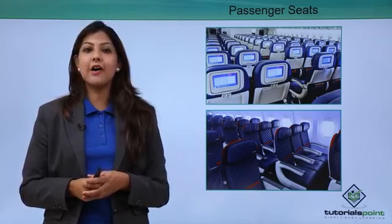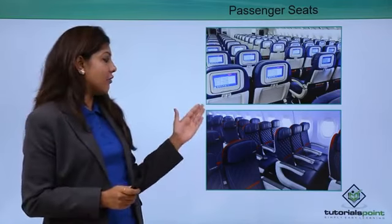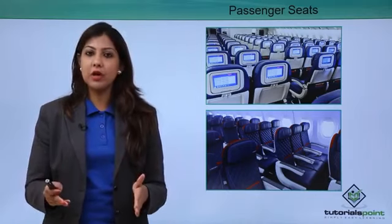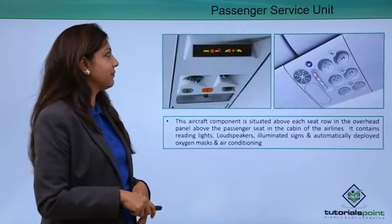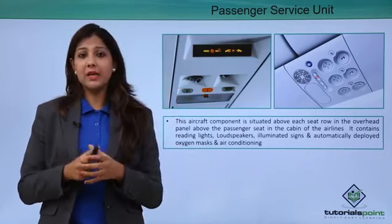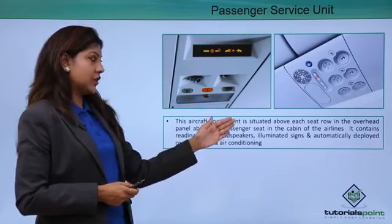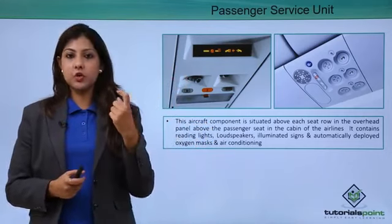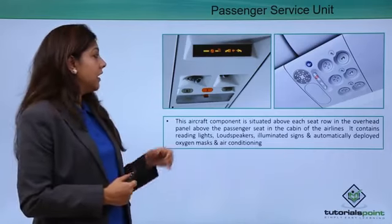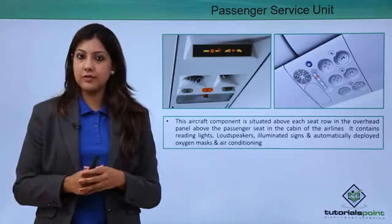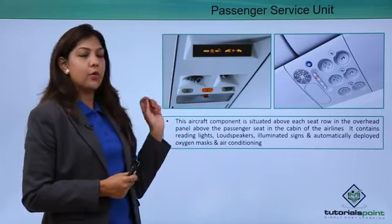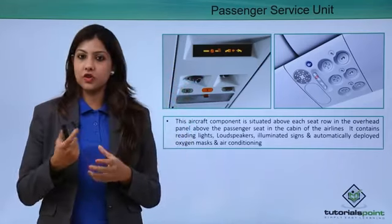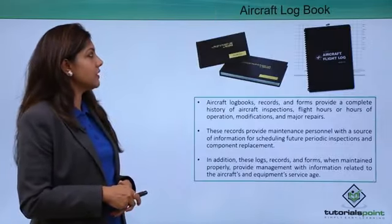Passenger seats are not foldable; they are upright and have armrests, an in-flight entertainment system, a tray table, a pocket containing the air sickness bag, and a safety instruction card. Above each passenger seat is a Passenger Service Unit, or PSU, an aircraft component situated in the overhead panel above each seat row. The PSU contains an air vent to control airflow, a call bell to summon the flight attendant, a reading light that can be opened or closed, and the oxygen unit.